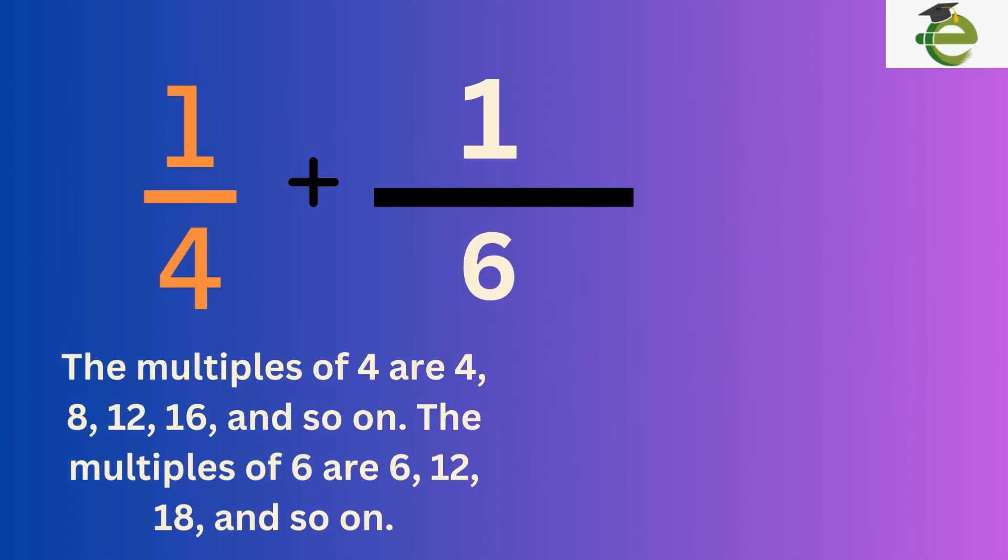For example, if you want to add one-fourth and one-sixth. First, list the denominators, which are four and six. Then, find the least common multiple. The smallest or least common multiple is twelve, so the common denominator is twelve.